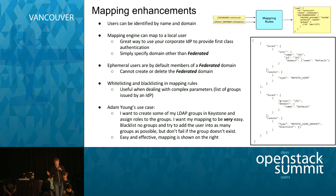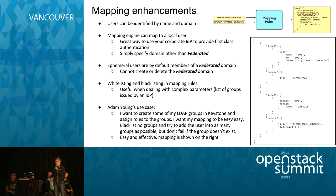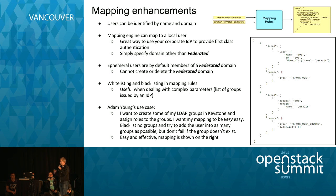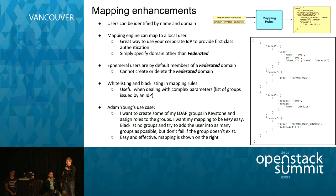Thanks, Steve. Mapping enhancements in Kilo. A short reminder: the mapping engine in Keystone is our secret weapon for the OS federated workflow. It translates credentials from a SAML assertion or OpenID Connect claim into something usable for Keystone — user ID, username, domain, and which groups the user would be a member of. It's a very powerful module. We're adding new features to ease use cases and make configuration easier. During the Kilo cycle, we added several new features.